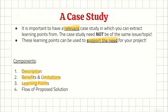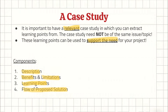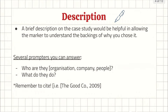We've got four main components: the description, the benefits and limitations, the learning points you'll derive from the case study, and lastly the flow of proposed solution. We are building up into the next chapter and the chapter thereafter to give the marker and examiners a rough understanding of why you chose this case study and how it will link to your proposed solution later on.